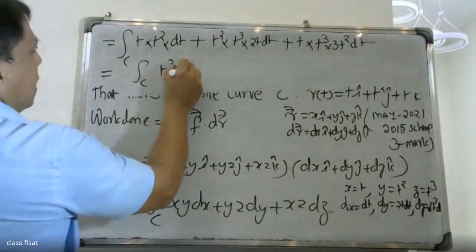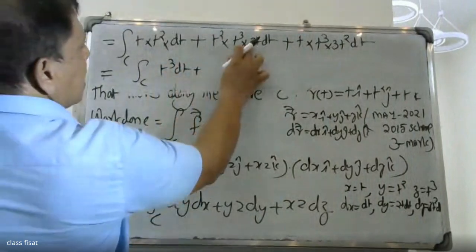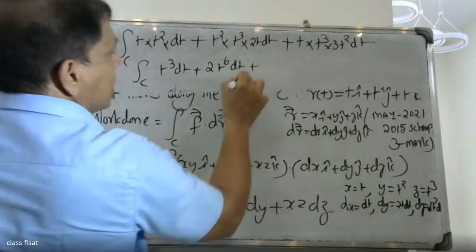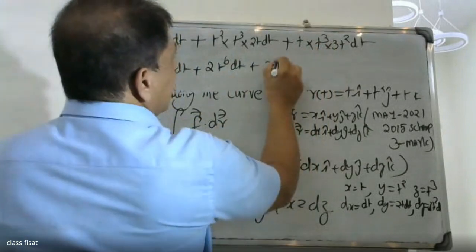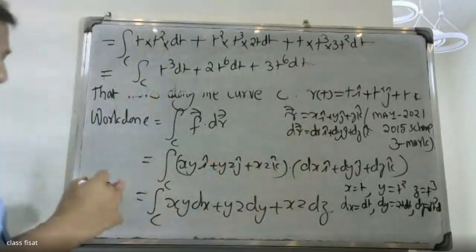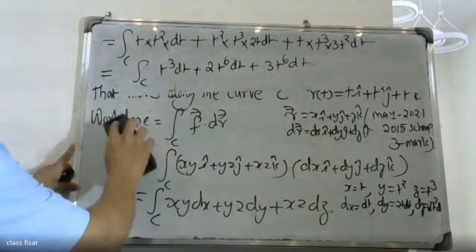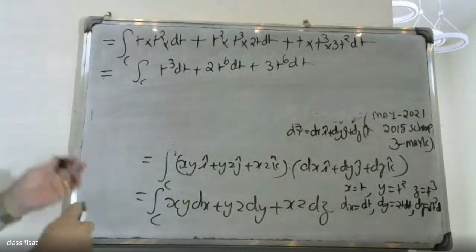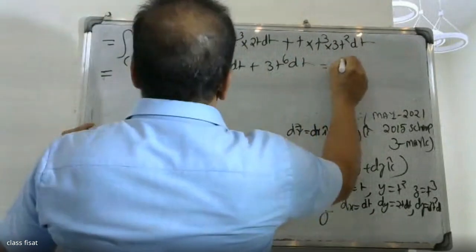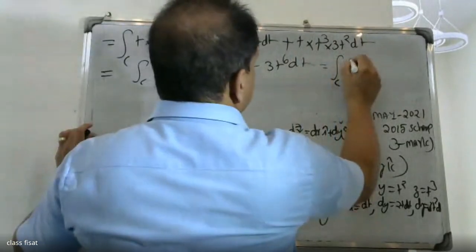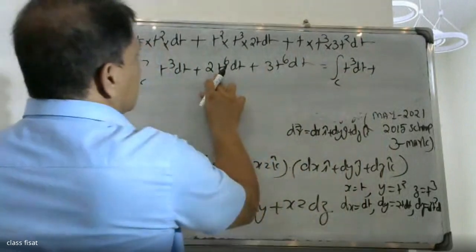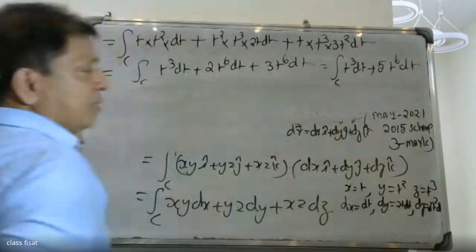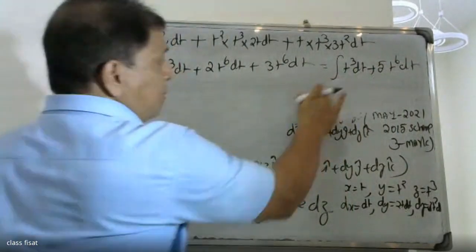Simplifying this, we get t³ dt plus 2t⁶ dt plus 3t⁶ dt, which equals t³ plus 5t⁶ dt. Now we can integrate this expression.